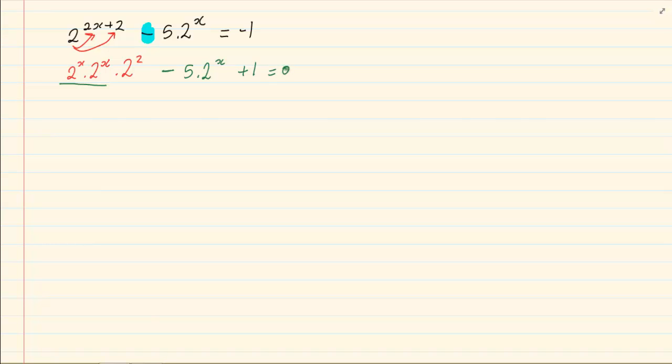Why am I bringing the 1 over? Because I should know by now that if I have 2^(2x), I am looking at a trinomial. 2^x, we are going to make it equal to k, giving us k² times 4, because 2² is 4, minus 5k plus 1 equals 0.